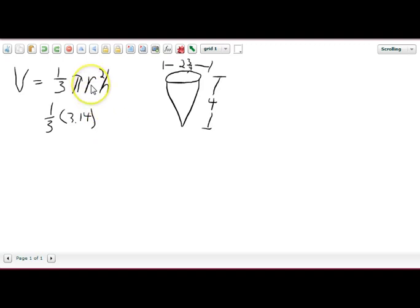So the number pi is 3.14. And then r, r stands for radius. So the distance across a circle is called the diameter. So the full distance from this point to this point is the diameter. But then the radius is half the distance across the circle. So here we have 2 and 3 fourths. And so we're just going to cut that in half.